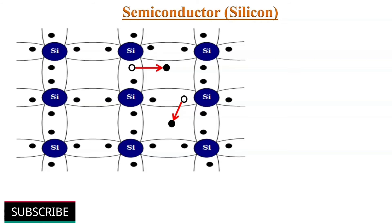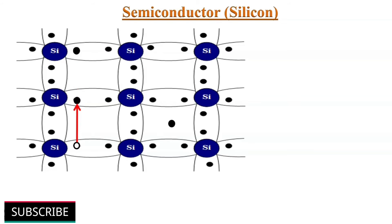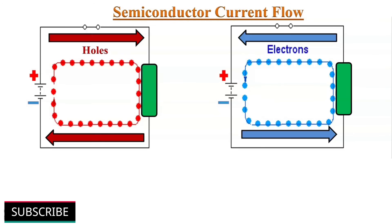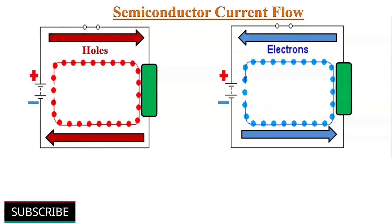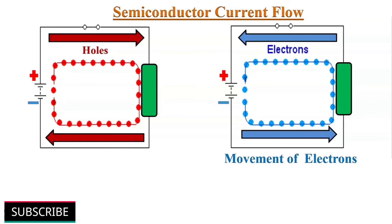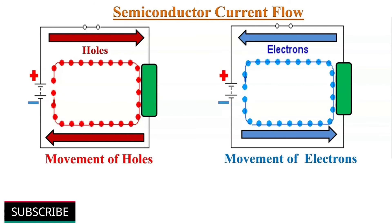Electrons and holes move from one place to another and occupy each other's place. So in semiconductors, we get flow of current due to the movement of two types of charges — electrons and holes. This is the biggest difference between conductors and semiconductors: in conductors, current flows only due to electrons, but in semiconductors, current flows due to both electrons and holes.